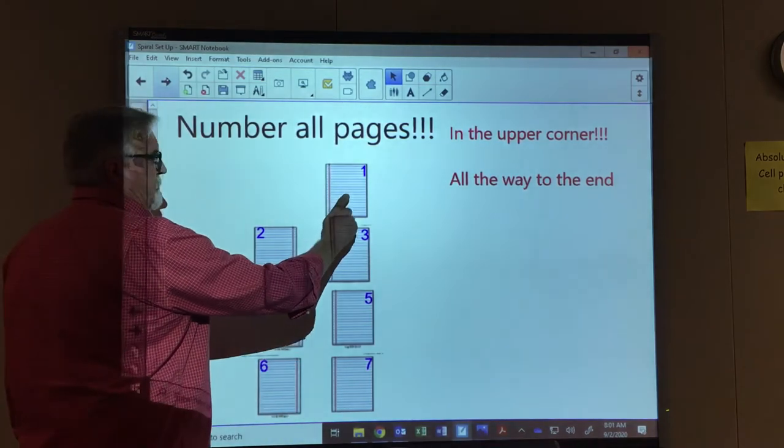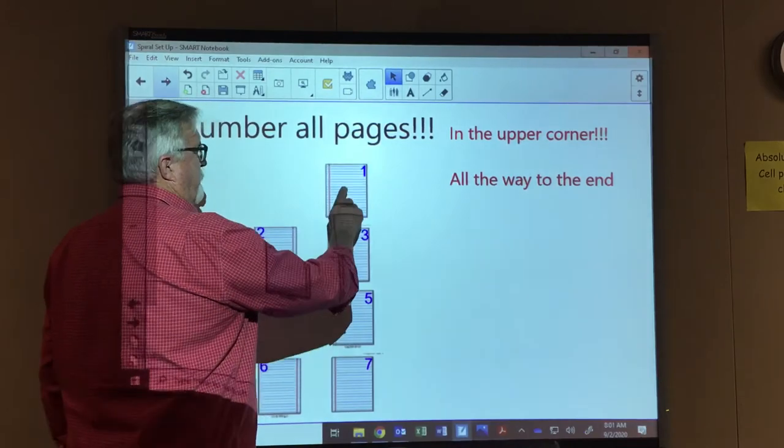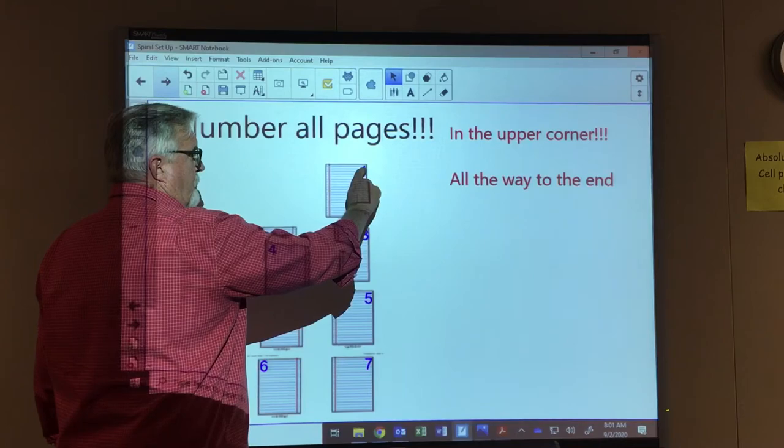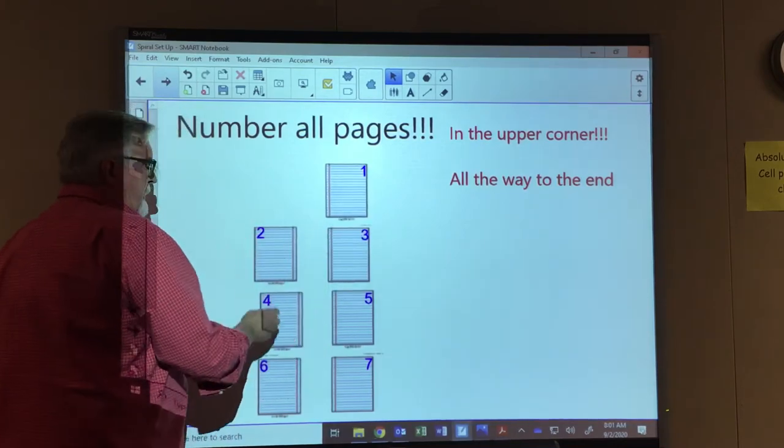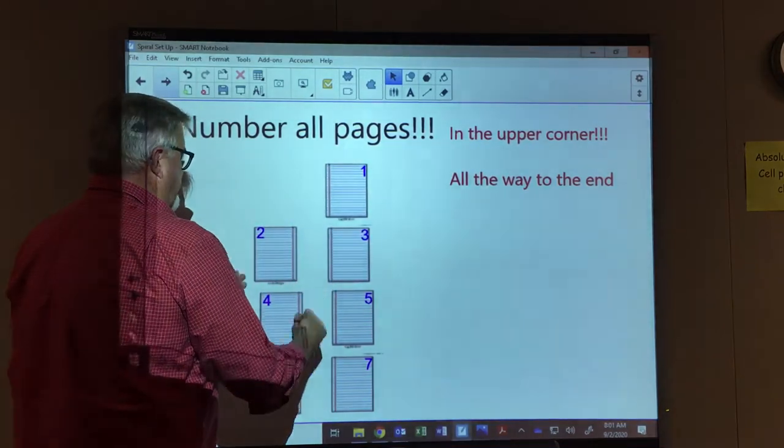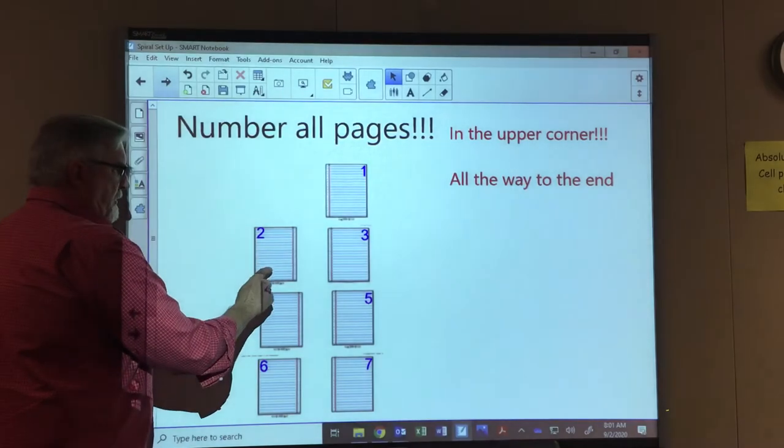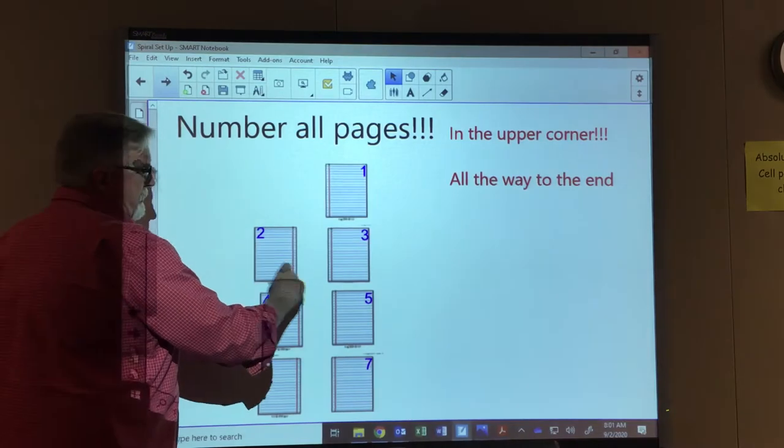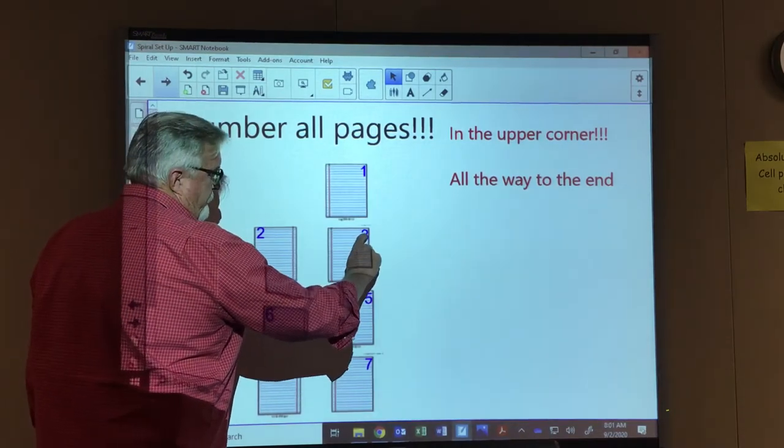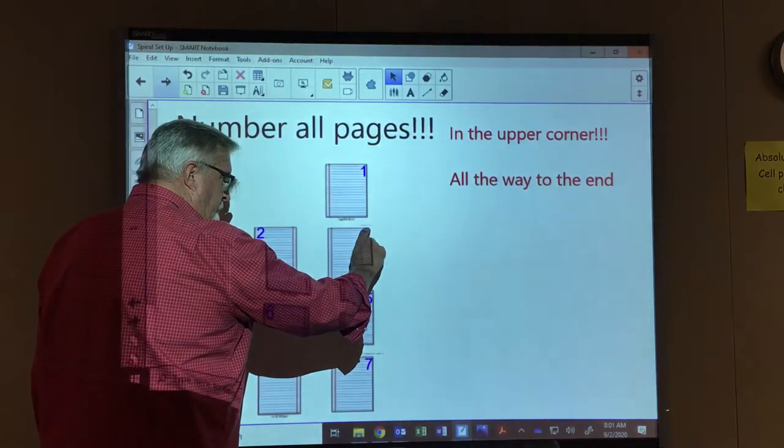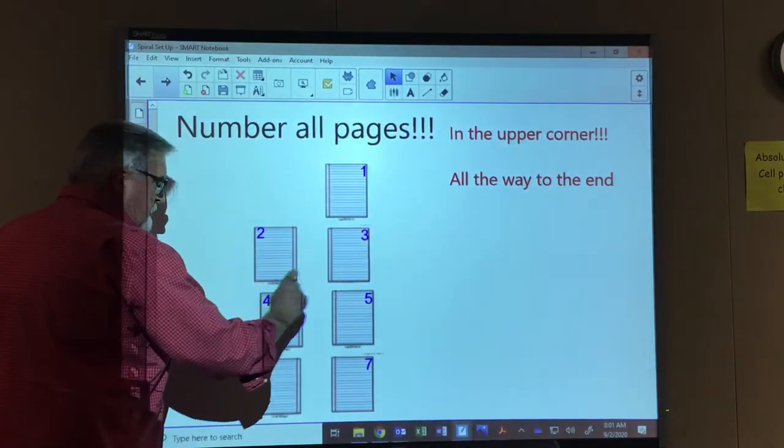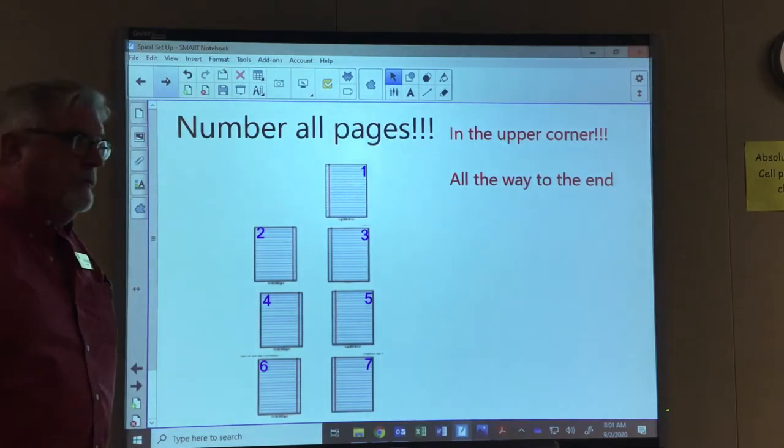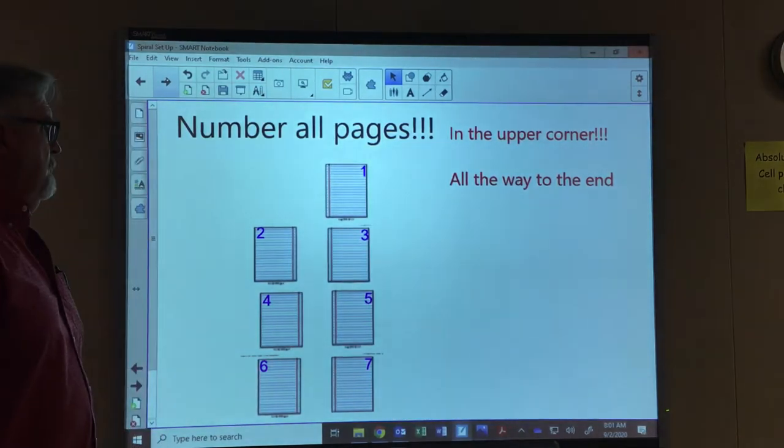We're gonna start on the—once you open up your spiral, the very first page you see, up in the top right hand corner, I want you to put the number one. Go ahead and turn the page and you should have two pages. Now on the left page, put the number two up in the top left hand corner. On the right hand page, put the number three up in the top right hand corner, and just keep going on.